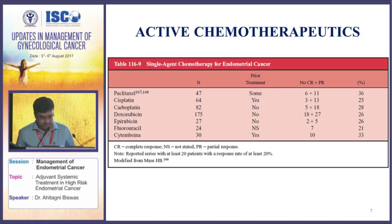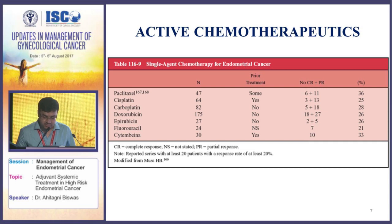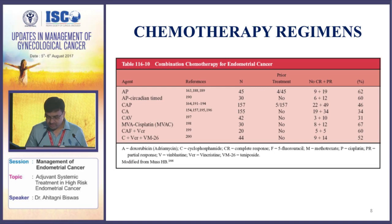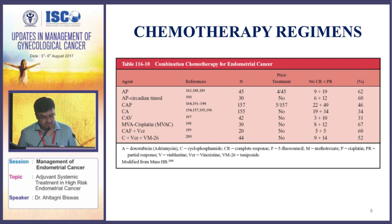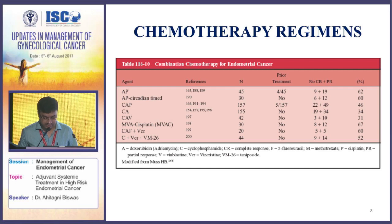Moving on to the active chemotherapeutics in endometrial cancer, the agents with single-agent efficacy are cisplatin, carboplatin, doxorubicin, epirubicin, paclitaxel, and docetaxel, with response rates hovering between 20 to 40 percent. When we combine chemotherapeutic agents, the response rate increases to 40 to 60 percent. The common chemotherapy combinations are cisplatin-adriamycin, cisplatin-adriamycin-cyclophosphamide, and more recently paclitaxel and carboplatin, and docetaxel and cisplatin.